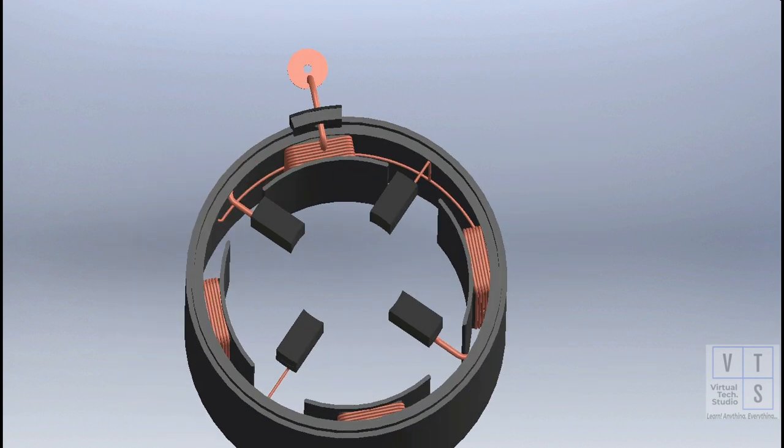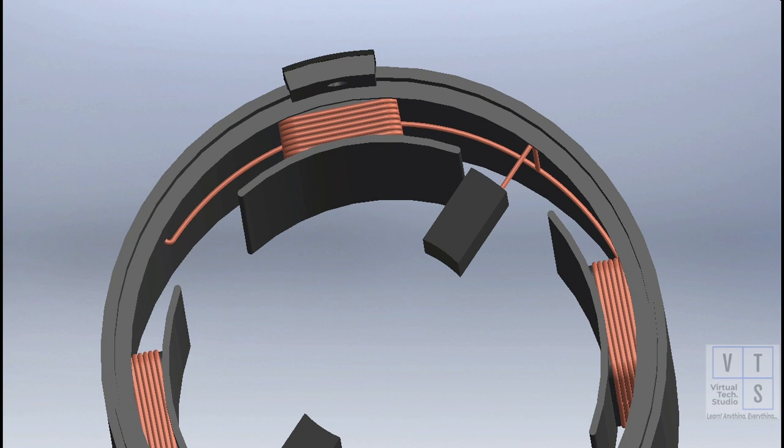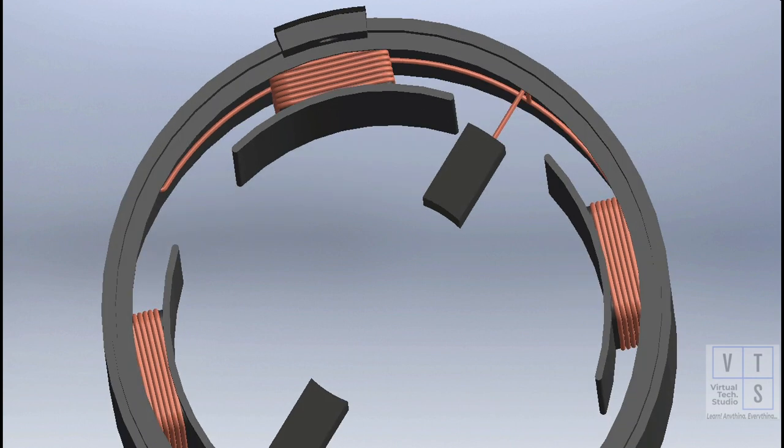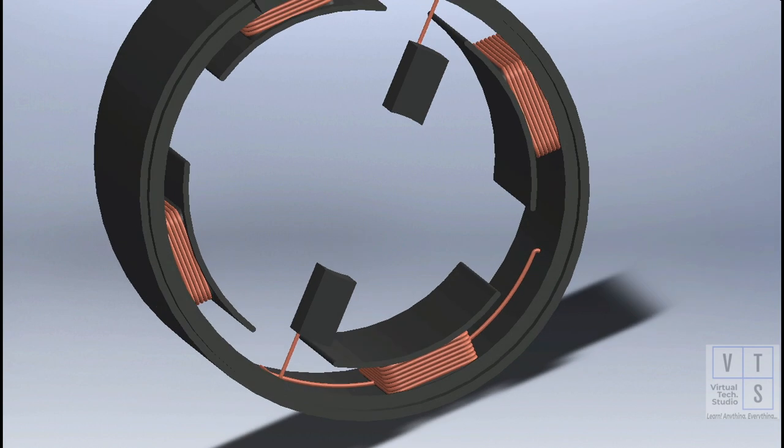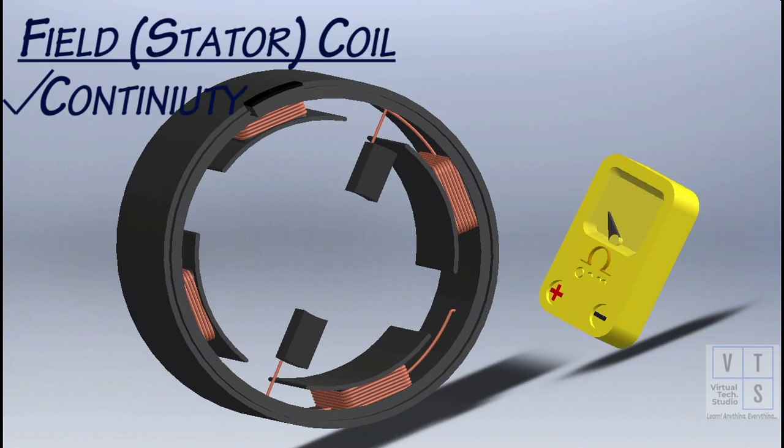There are two stator coils. Each coil has two windings. One end of each coil is body grounded and the other end is connected to the carbon brush. Check for the continuity between field coils carbon brushes. Continuity should exist. Otherwise the whole yoke assembly need to be rewound or replaced.